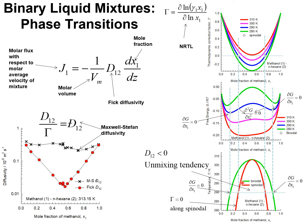Let us examine diffusion in the binary mixture of methanol and normal hexane at a temperature of 313 Kelvin. The Fick diffusivity is plotted here as a function of mole fraction of methanol. We note that the Fick diffusivity decreases by about an order of magnitude as a composition of 0.5 is approached from either end.